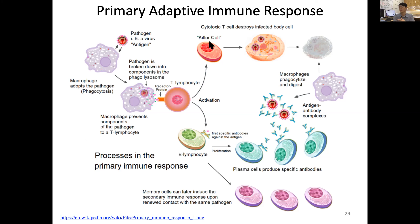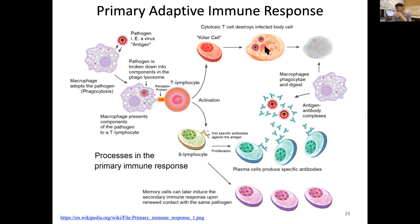The killer cells — in this case we call them CTL, or cytotoxic T cells — will now destroy those infected cells. That's one way: the cytotoxic T cell will recognize the same kind of antigen, go to those infected cells, and kill them.